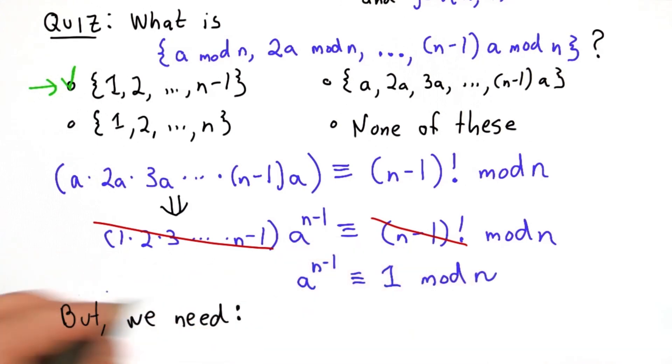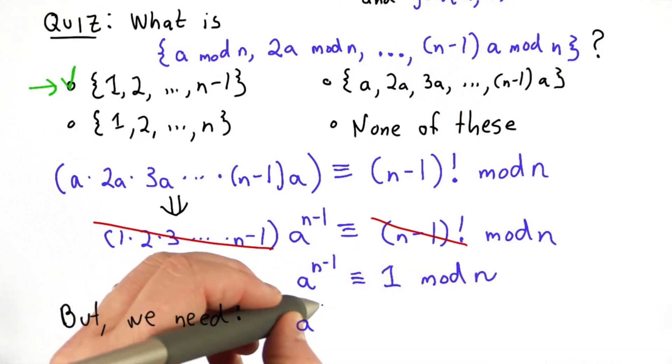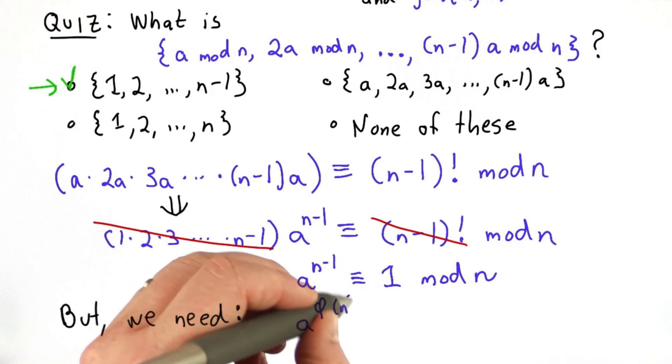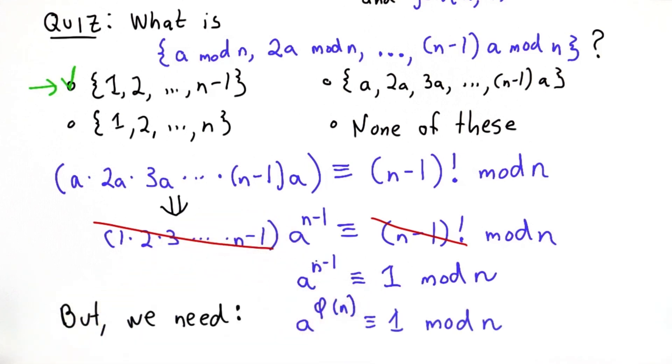So this is pretty close to what we want, but what we needed for Euler's theorem, and what we'll need for the RSA correctness proof, is this property with the totient of n. And that's different from what we have here.